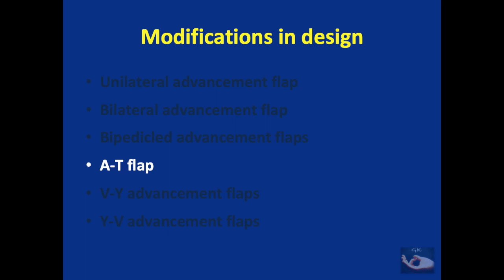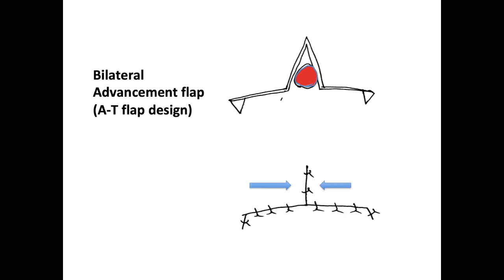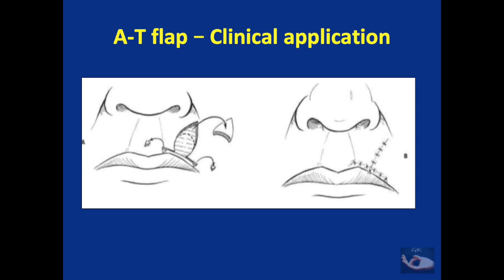The next modification is the A to T flap. The circular defect shown is converted into a triangular defect and flaps are raised from both sides to advance and cover the defect. Excision of Burrow's triangle on both sides may be done to enhance advancement, and the final suture line usually settles in this pattern. This design is usually selected for areas where one side is an important landmark, like the upper lip vermilion or the eyebrows.